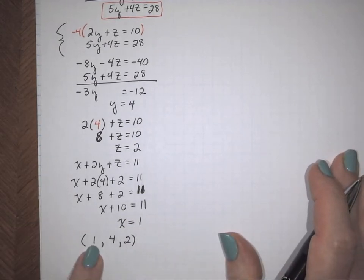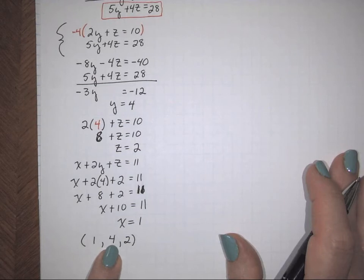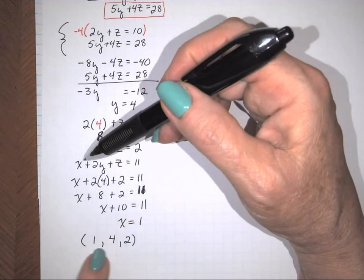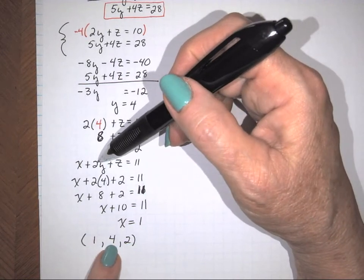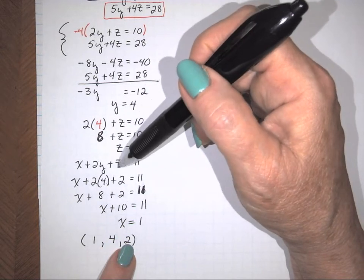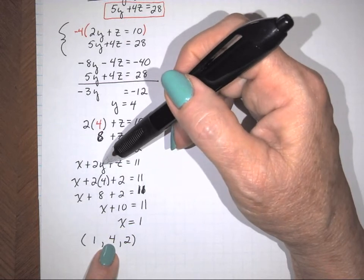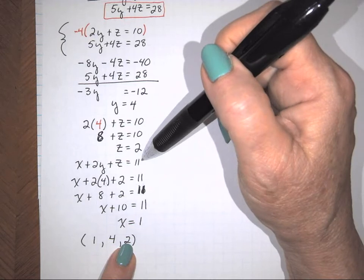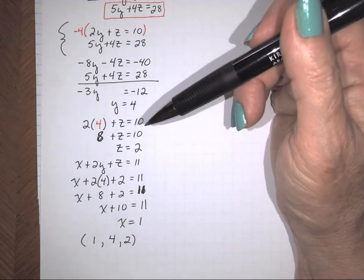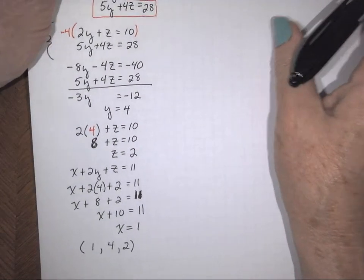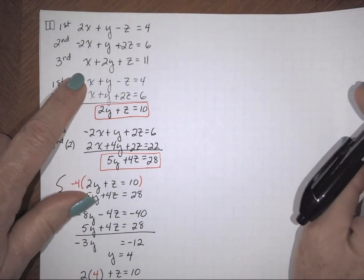To verify: go back to each equation and substitute x = 1, y = 4, z = 2. For the third equation: 1 + 2(4) + 2 = 1 + 8 + 2 = 11. ✓ It will work when you check with the other two equations as well. This is the solution when you have this system.